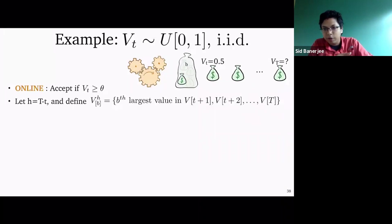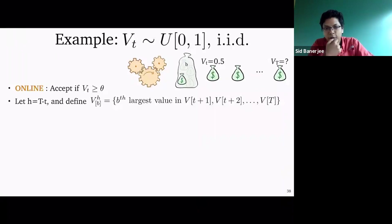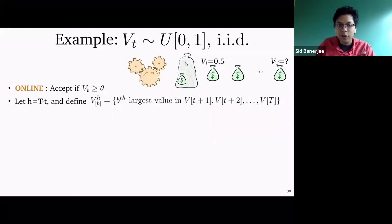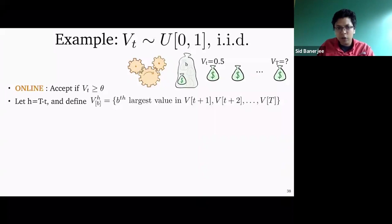The style of policy I'm going to consider is a threshold policy at time t: accept any value which is more than some threshold theta, to be chosen later. I want to do the same kind of compensation argument to see how well this threshold policy does. To do this, I need one other definition: if the remaining horizon is h — so T minus t equals h — I define the quantity v^h_b as the b-th largest value among the future arrivals.